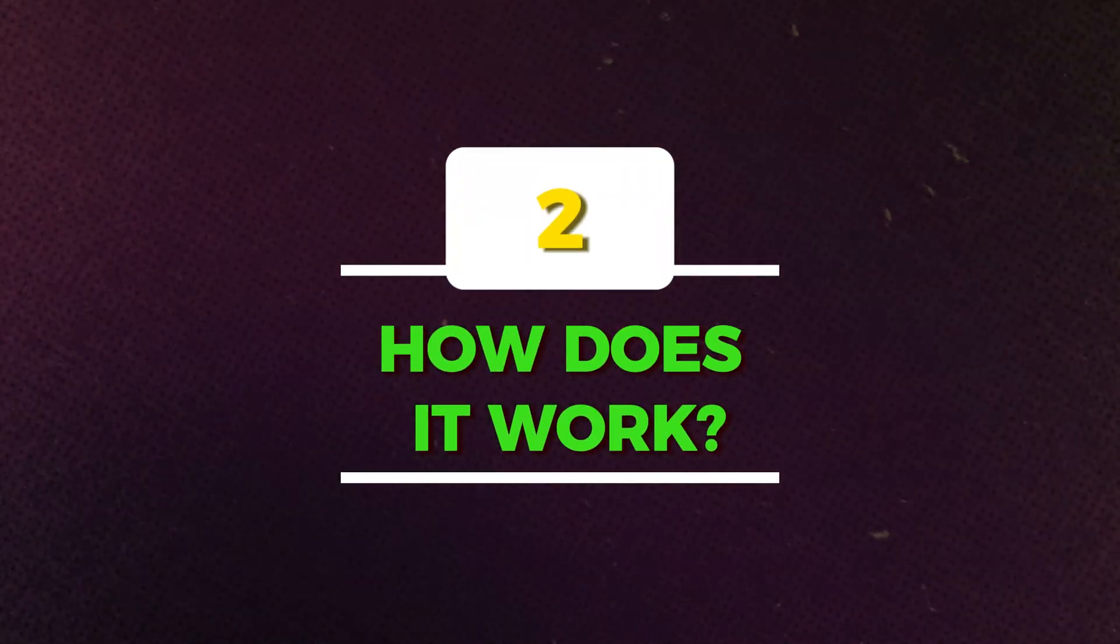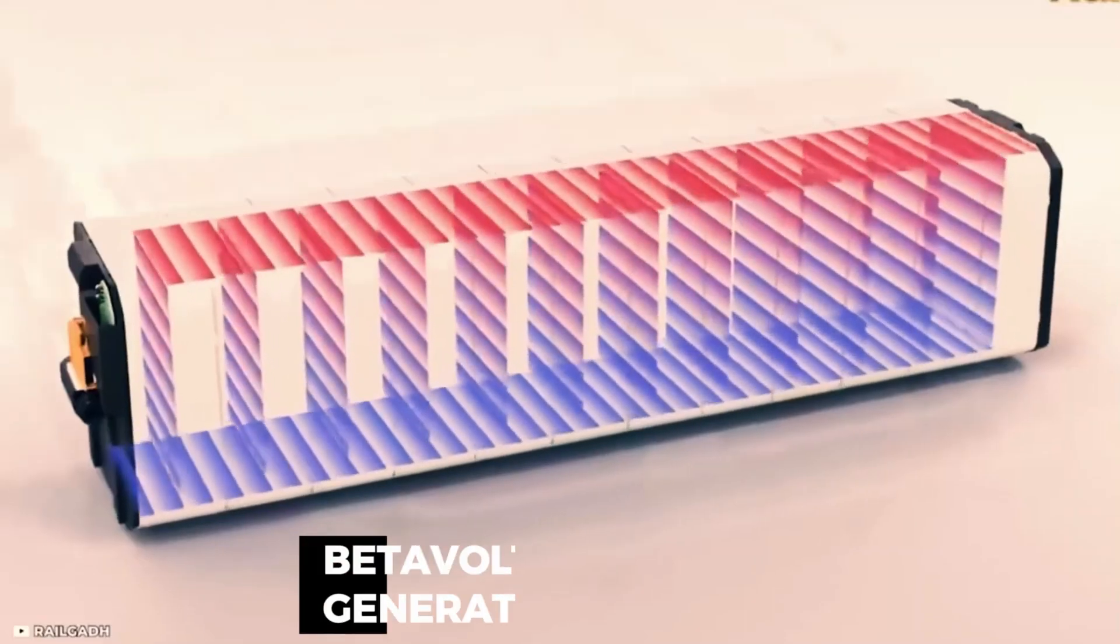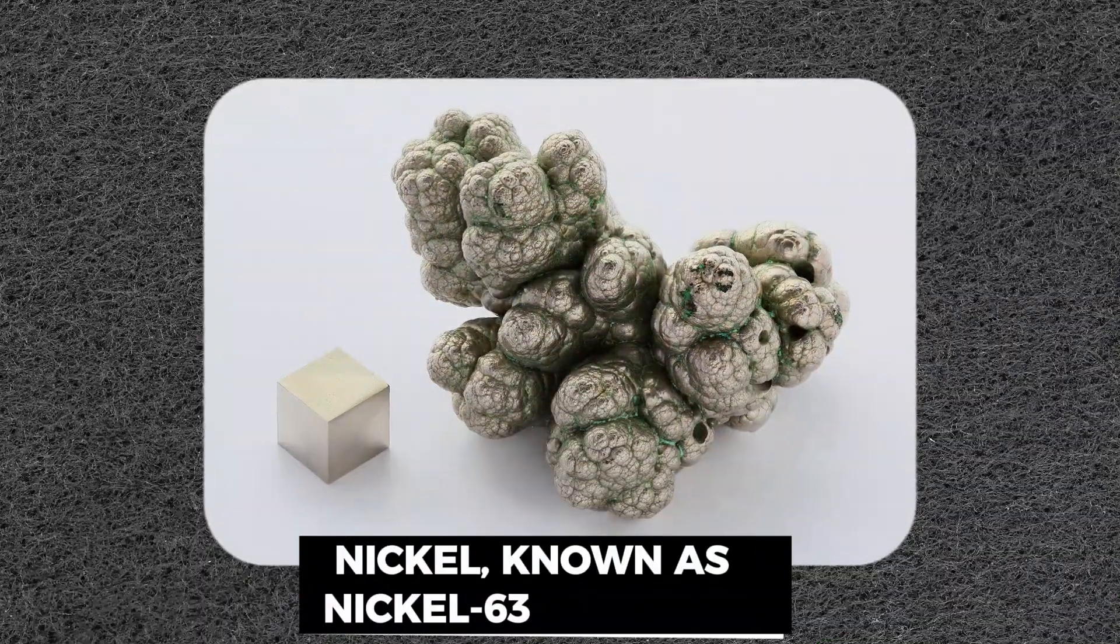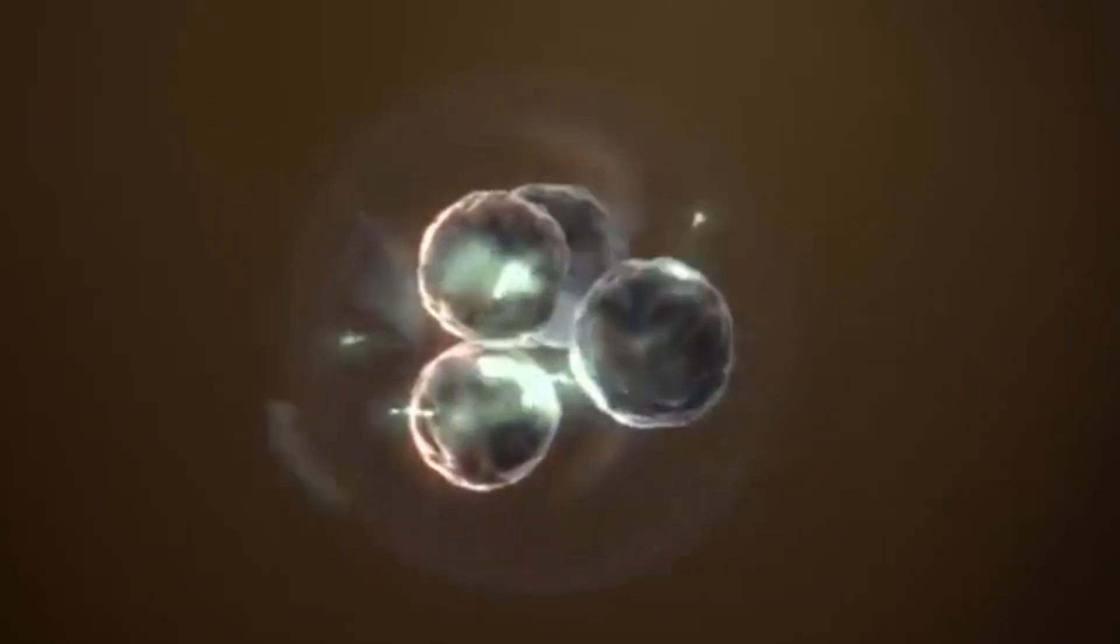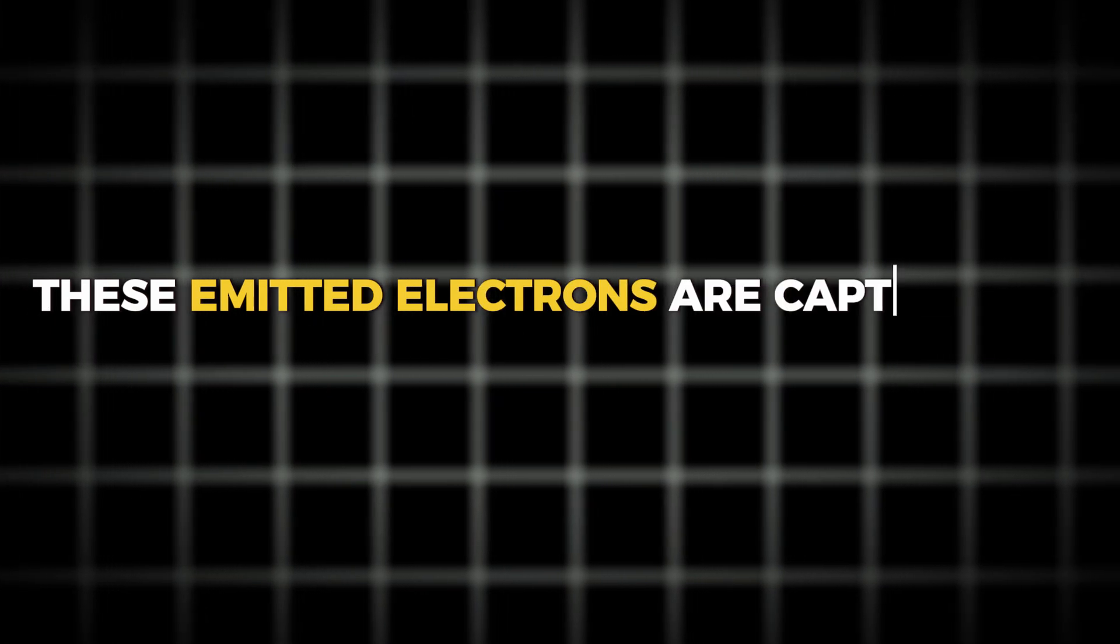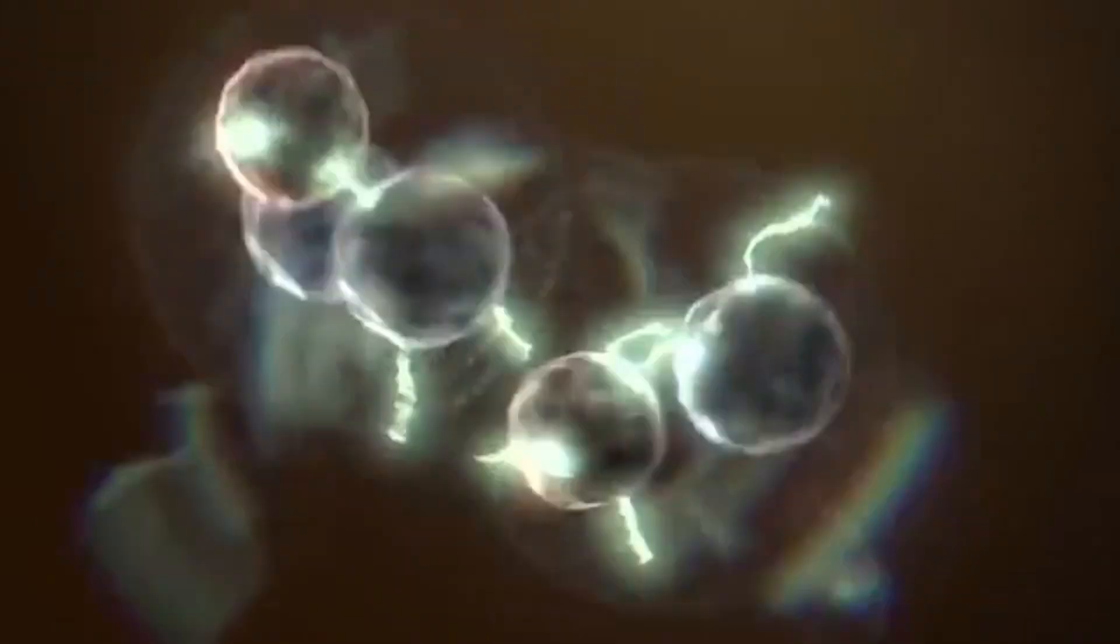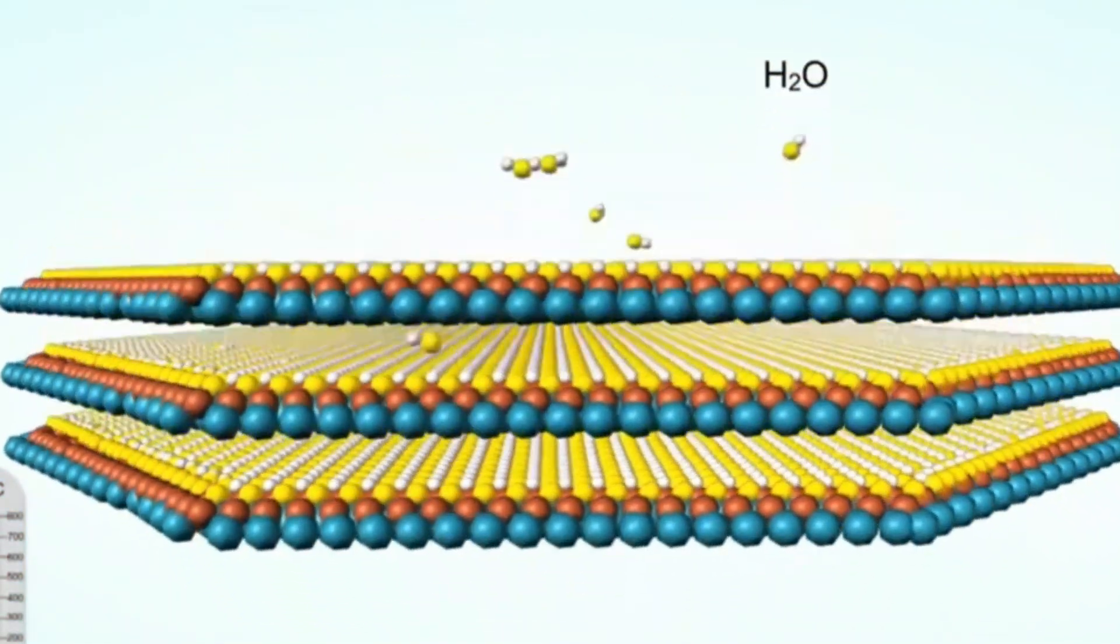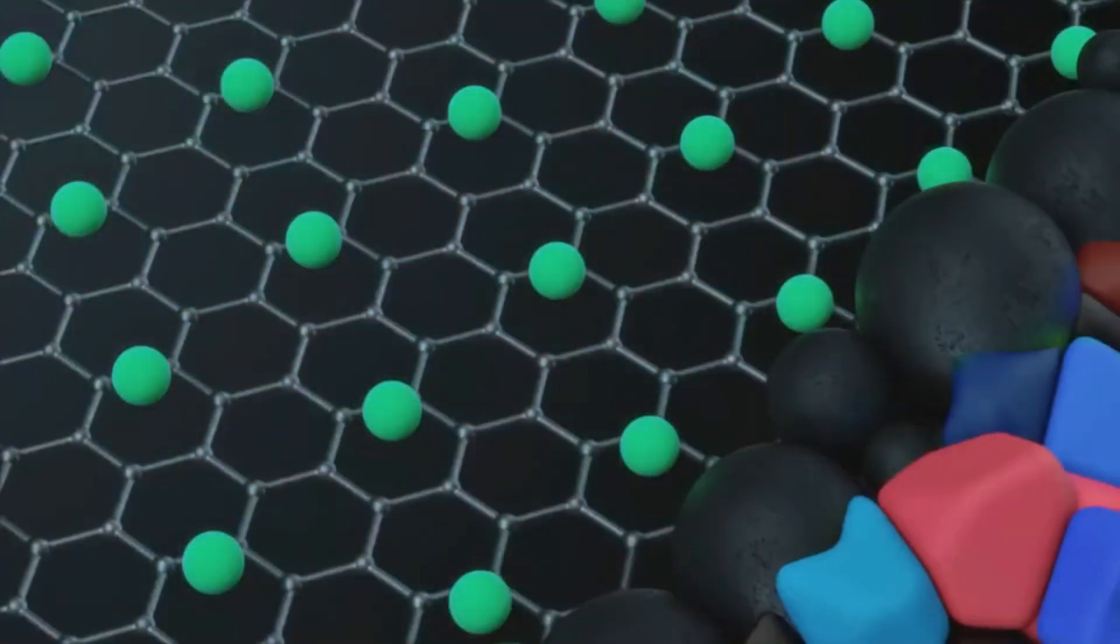The BV-100 utilizes a process called beta-voltaic generation. As nickel-63 undergoes radioactive decay, it transforms into copper and emits beta particles, which are essentially high-energy electrons. These emitted electrons are captured by a semiconductor layer made of diamond, which converts the kinetic energy into electric current, ensuring steady power output as long as the radioactive material remains active.